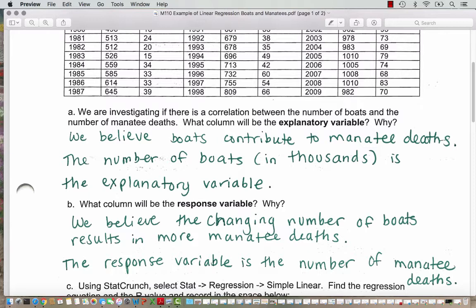That'll be on our x-axis when we plot our scatter plot. Which column will be the response variable? We believe the changing numbers of boats result in more manatee deaths, so the response variable is going to be the number of manatee deaths. We also have the years here - we can think of the years as a tracking data point but we don't need to use the years in our equation because we aren't thinking that the year depends on the manatee deaths. We think the number of boats is what influences the manatee deaths.